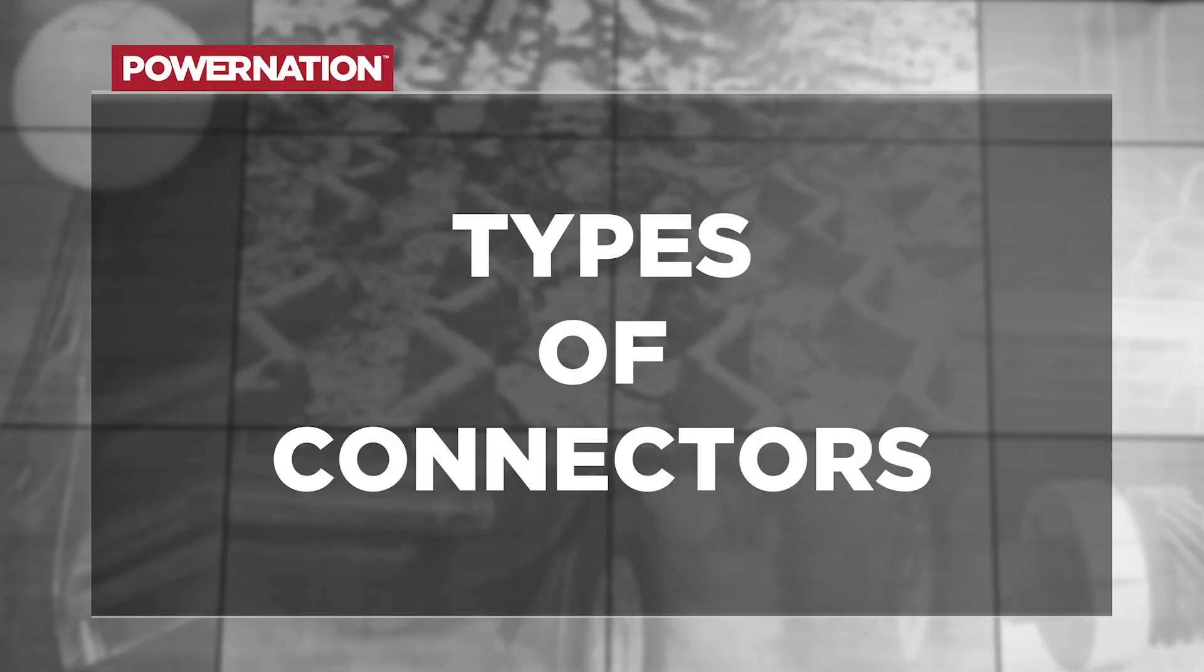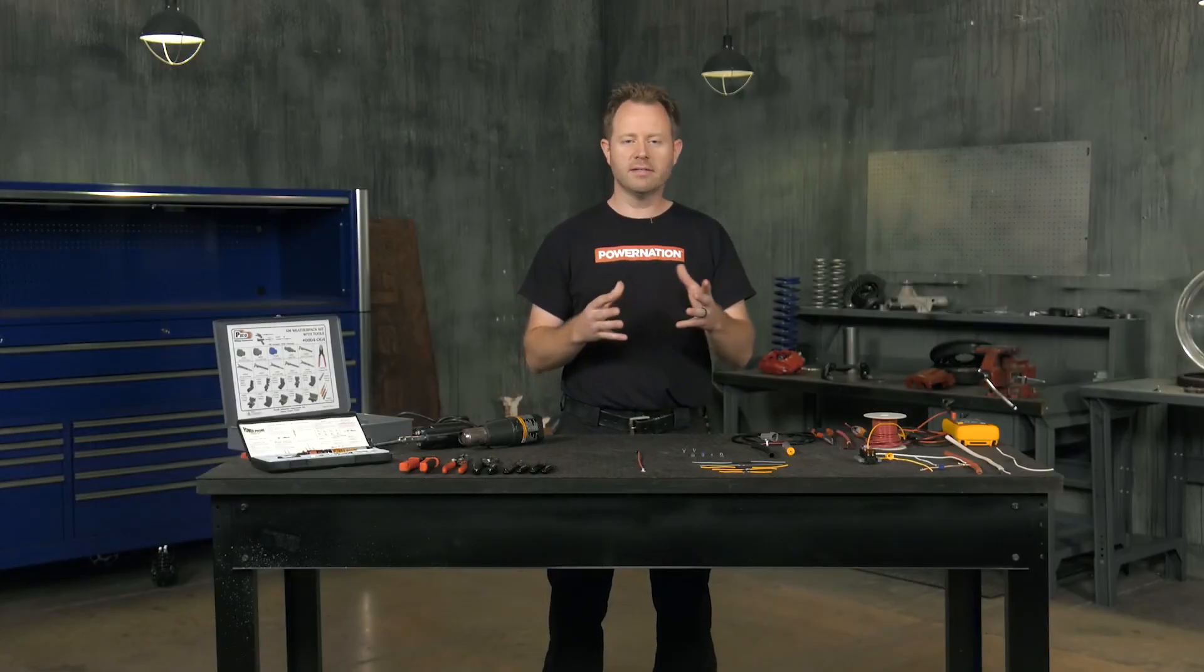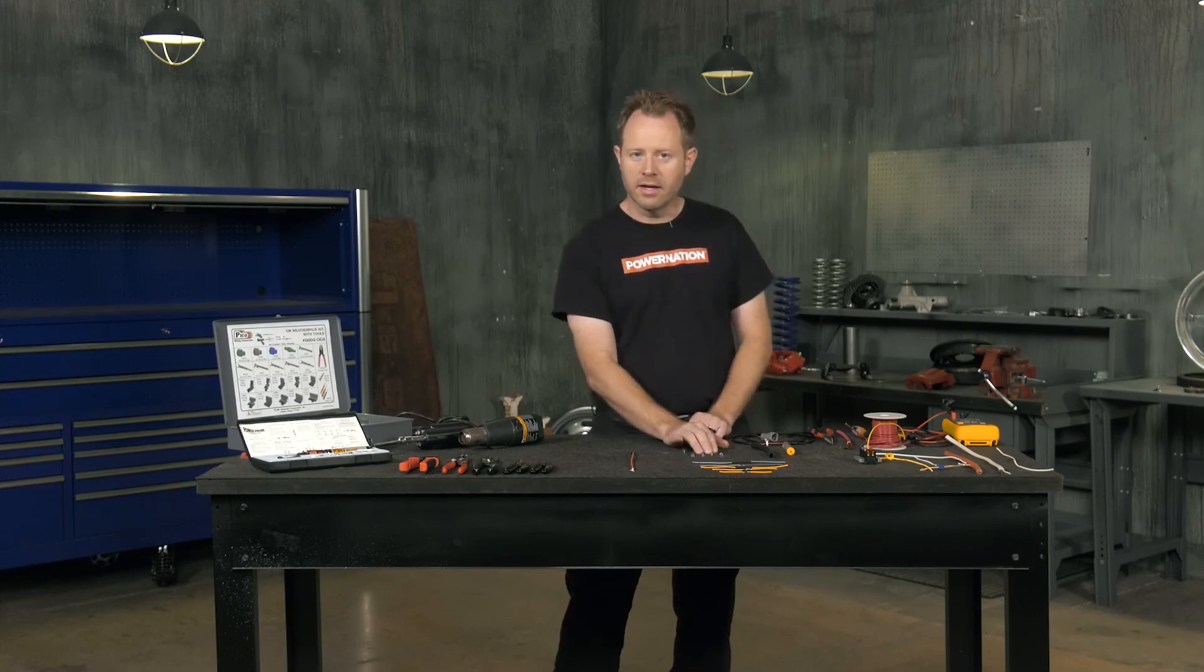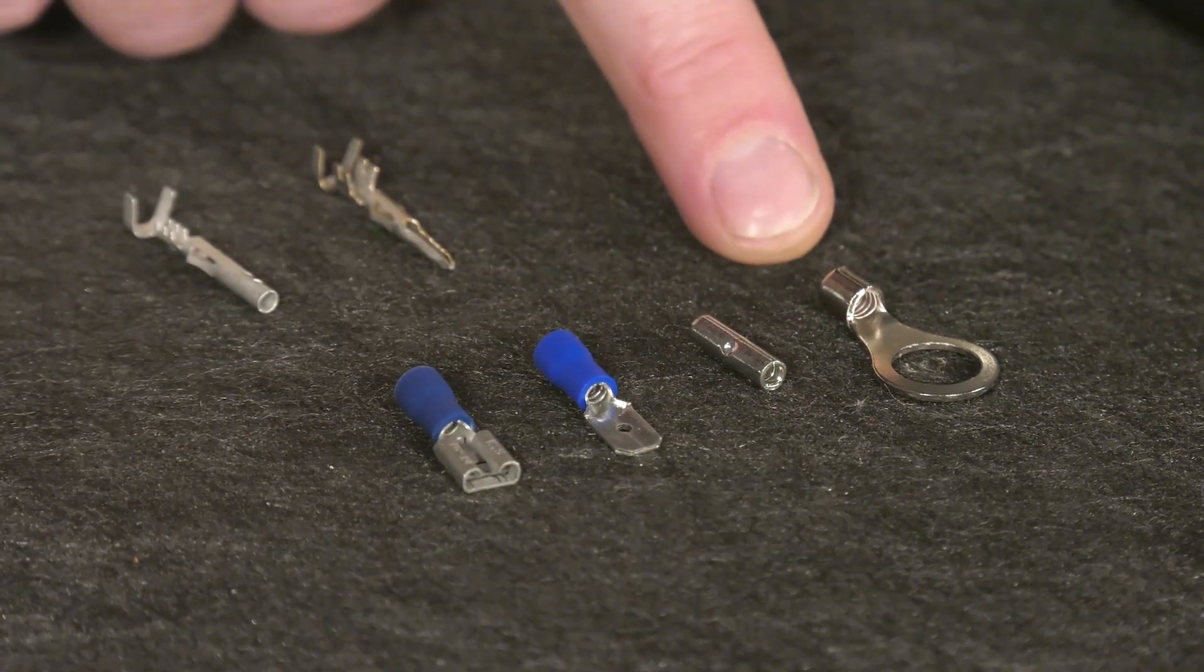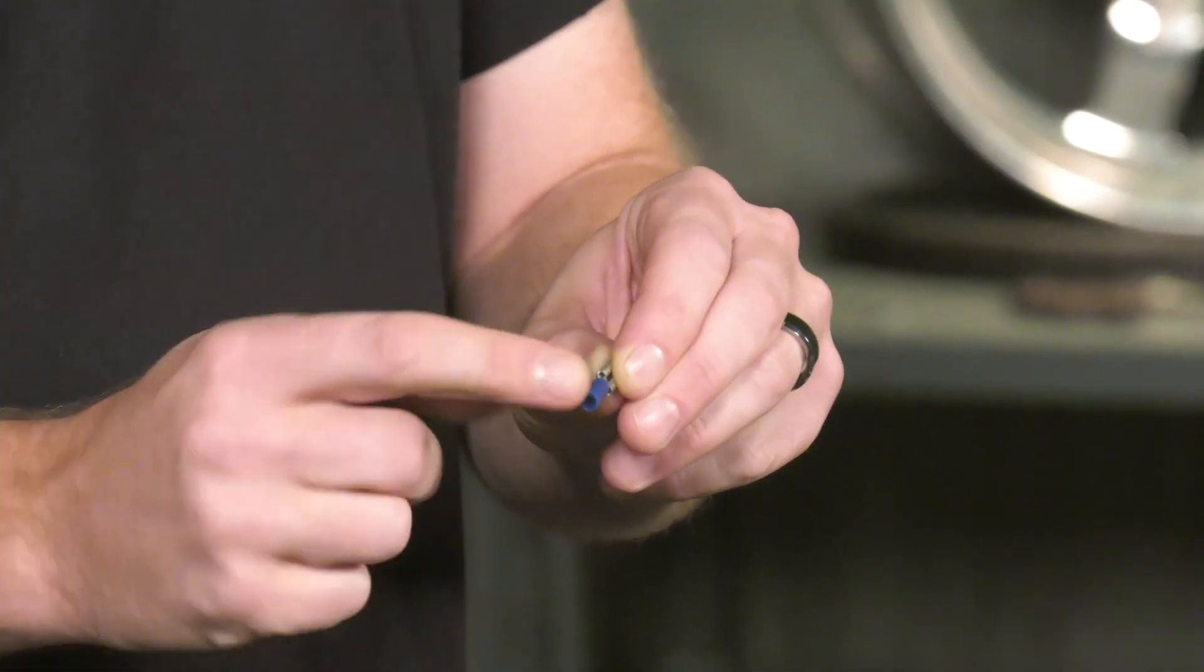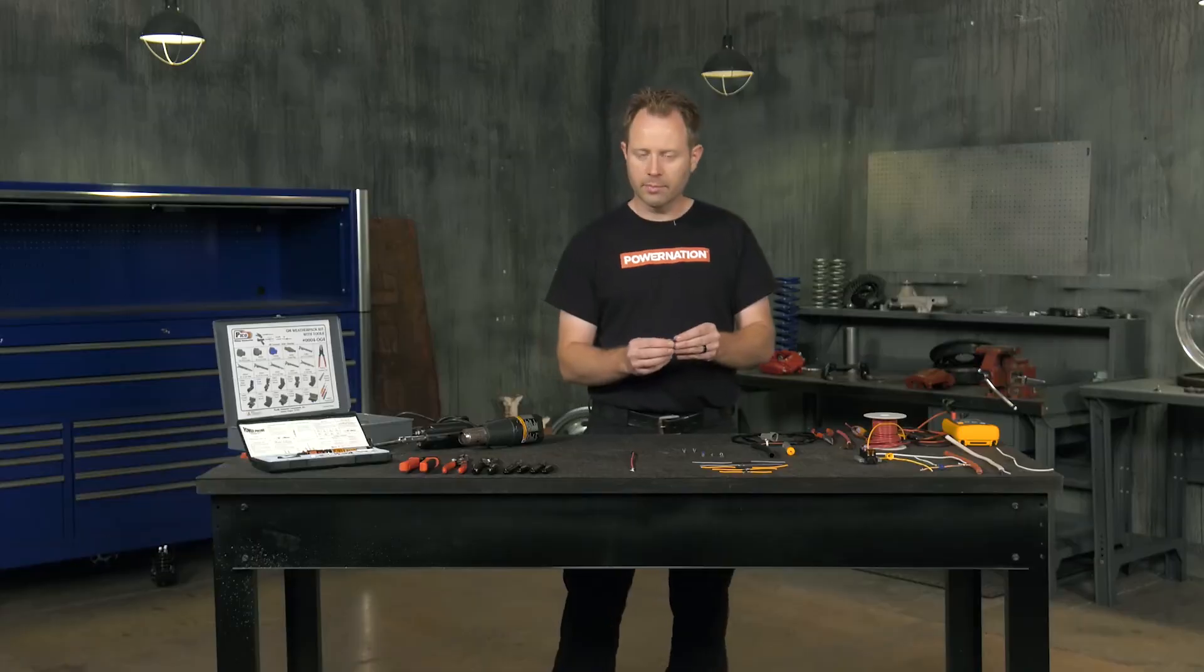Now when it comes to types of connectors, we've got a few different options. They range from your most basic all the way up to your high quality stuff like you get from the factory. The main thing here is insulated versus non-insulated terminals. Now what that means is these insulated ones have this blue plastic on it that kind of protects that connection there.